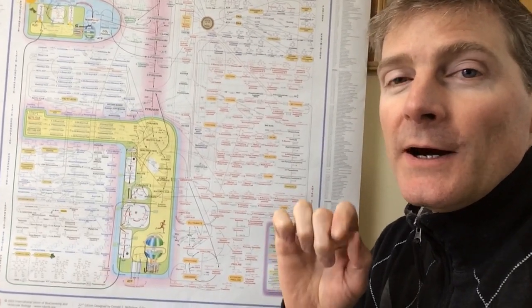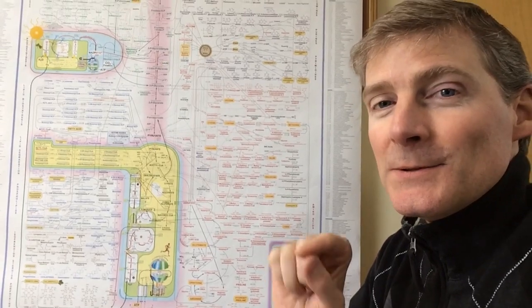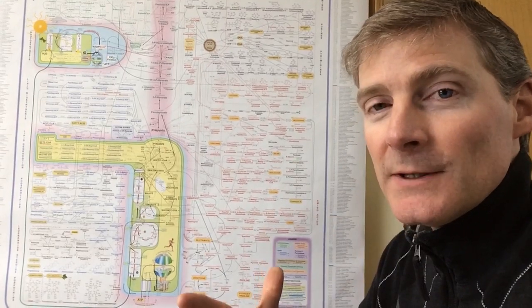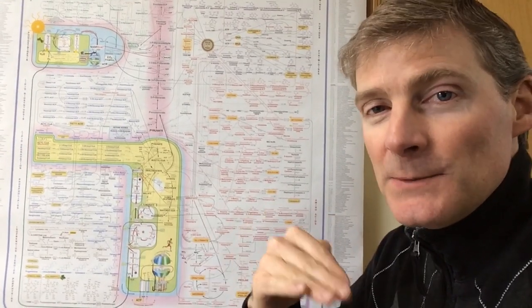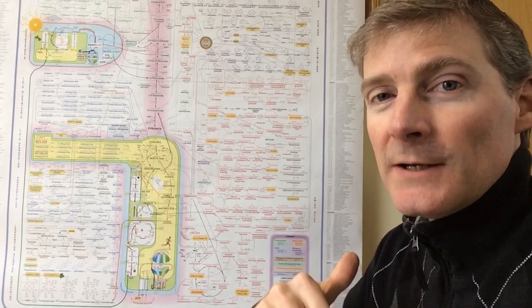If you look at a mitochondrion under a microscope, there's all kinds of little folds and stuff. Those membranes are the storage of electricity, it's like a battery. Mitochondria are little batteries and they move nutrients around, and those nutrients then make ATP, which is the energy source of the cells. It's like gas for your car.